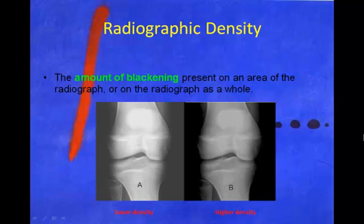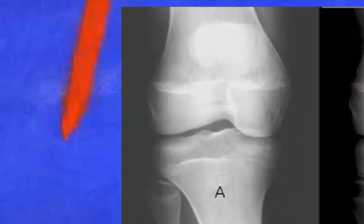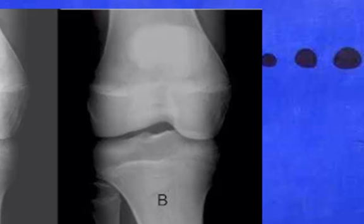Radiographic density is defined as the amount of blackening present on an area of the radiograph, or on the radiograph as a whole. Basically, radiographic density is how dark the image is. If you take a look at the image on the left — image A — it's much lighter than image B to the right. Simply stated, image A has a lower density, while image B has a higher density.